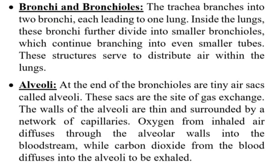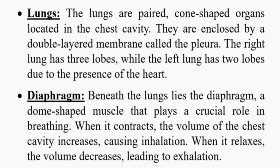Alveoli: At the end of the bronchioles are tiny air sacs called alveoli. These sacs are the site of gas exchange. The walls of the alveoli are thin and surrounded by a network of capillaries. Oxygen from inhaled air diffuses through the alveolar walls into the bloodstream, while carbon dioxide from the blood diffuses into the alveoli to be exhaled. Lungs: The lungs are paired, cone-shaped organs located in the chest cavity. They are enclosed by a double-layered membrane called the pleura. The right lung has three lobes, while the left lung has two lobes due to the presence of the heart.